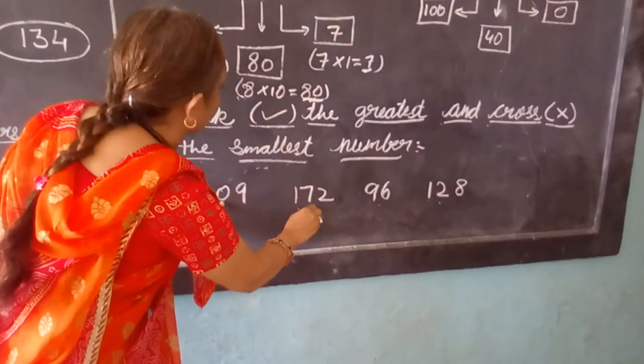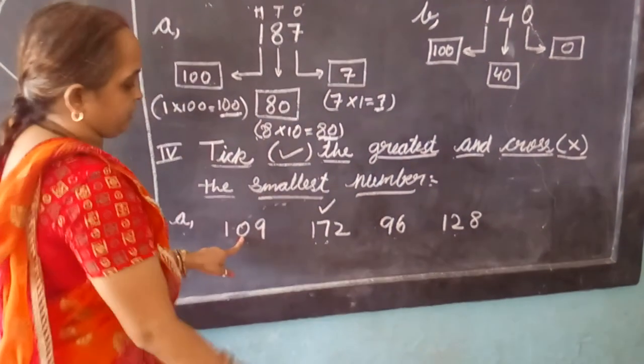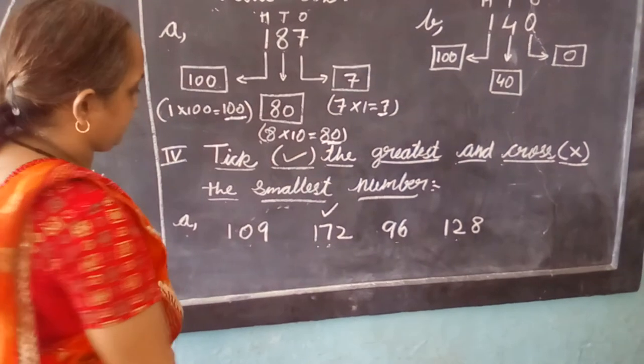So we will put a tick above the number. Tick on the 172. This is the greatest one.